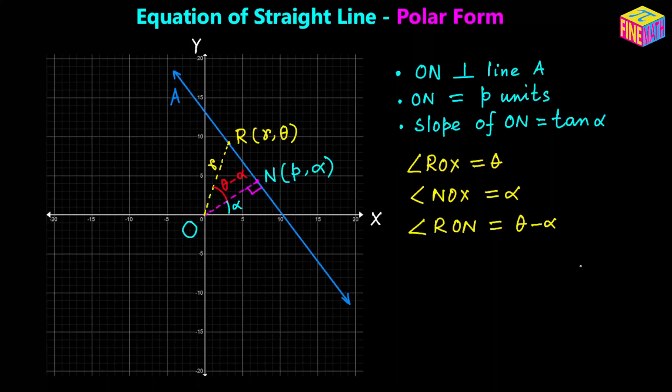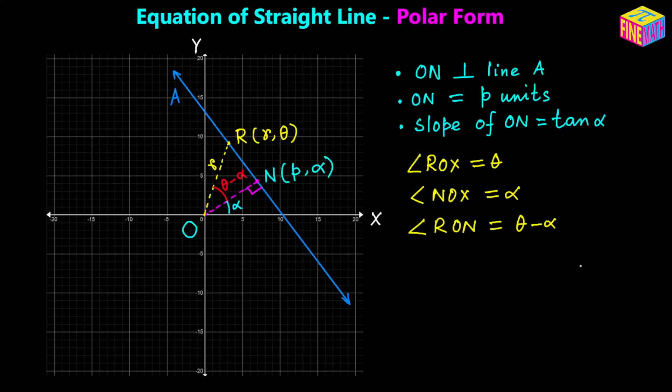Think about it: ROX is theta, as indicated in the polar coordinate of R, and the polar coordinate of N gives us p comma alpha, meaning NOX equals alpha. So the angle between R and N — that is, angle RON — would be theta minus alpha.